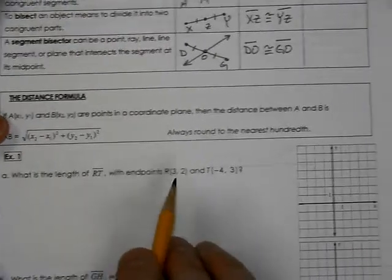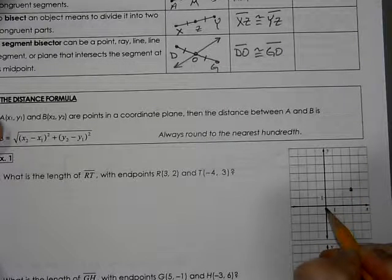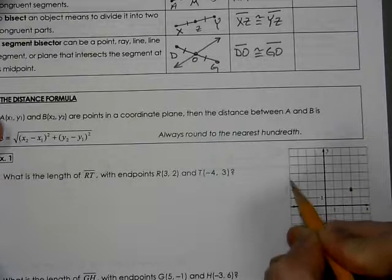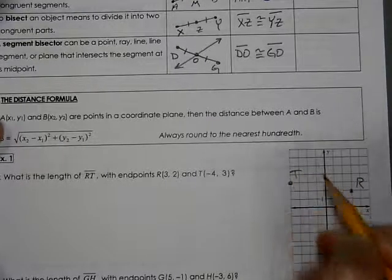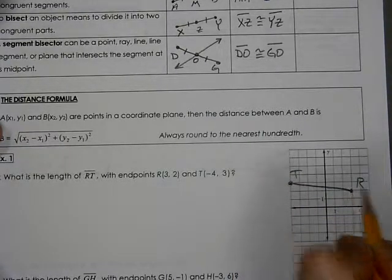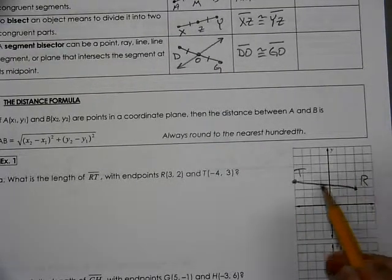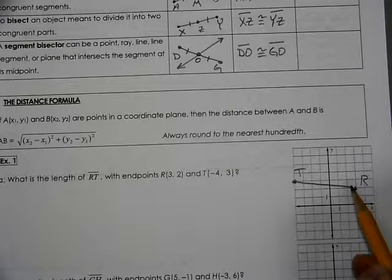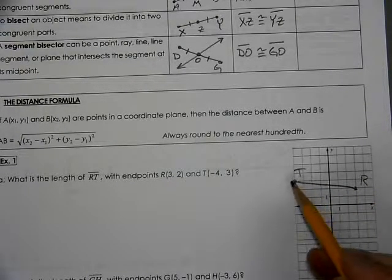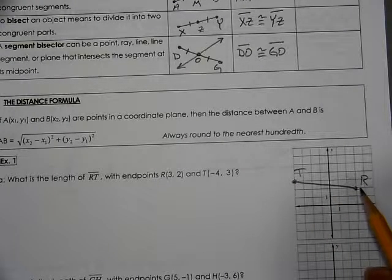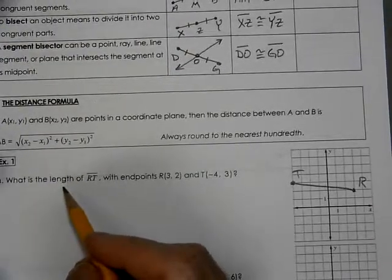What is the length of RT? These are our two points, R and T. We're going to find out the length. Here you cannot count it because it's not horizontal or vertical. It's slanted. To figure out a slanted measurement, the only way we can do that is to use the distance formula.